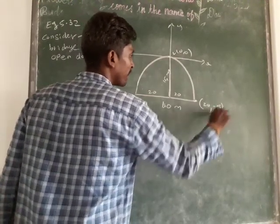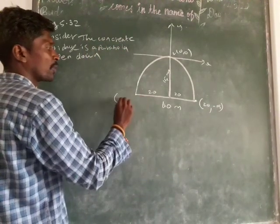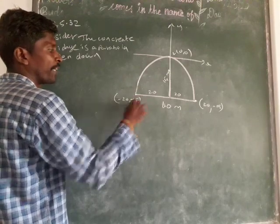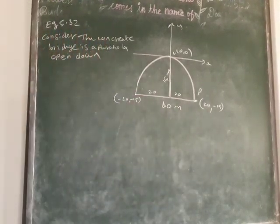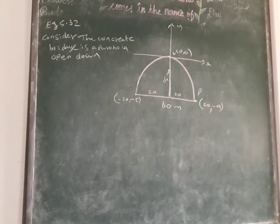y is 15, minus 15. If you take here the point, it is (-20, -15). So they ask to find what is the equation of the concrete bridge.